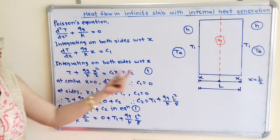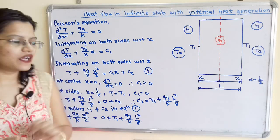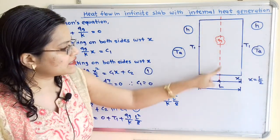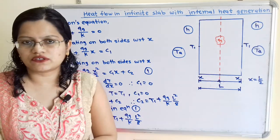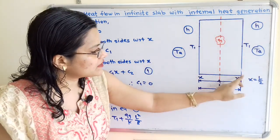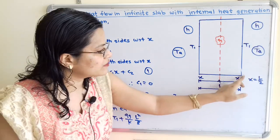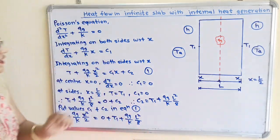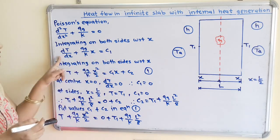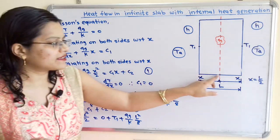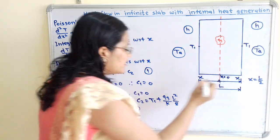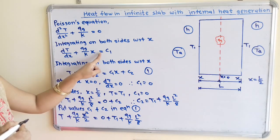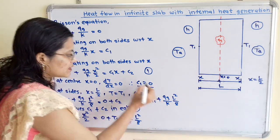Now we find the values of C1 and C2. At the center line, x = 0, and at one side, x = L/2. We first use x = 0 in the first integrated equation. At the center x = 0, the term (QG/K)·x becomes 0, so C1 = 0. This value C1 = 0 is important.